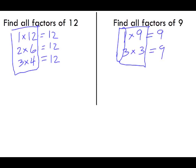Let me clean this up a little bit. So we've got 1 times 9 and 3 times 3. These are the factors.